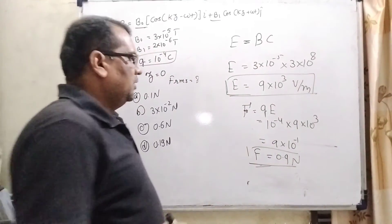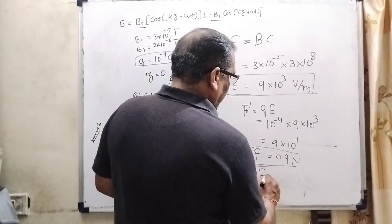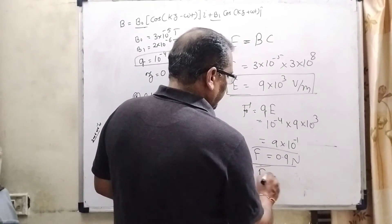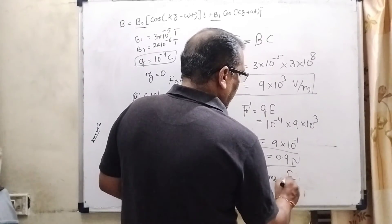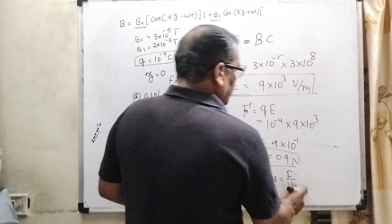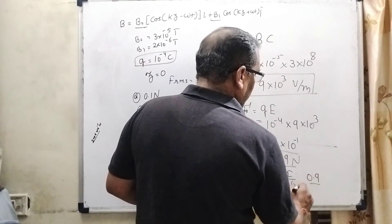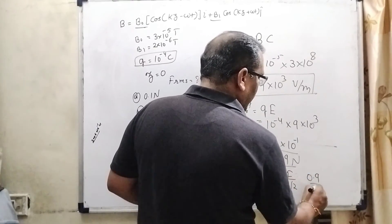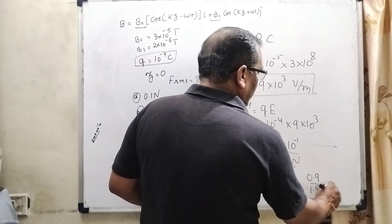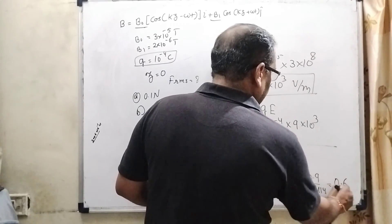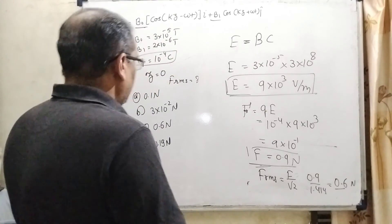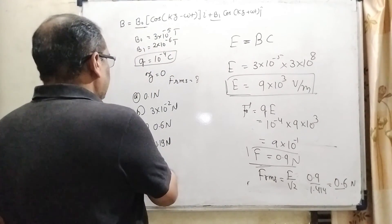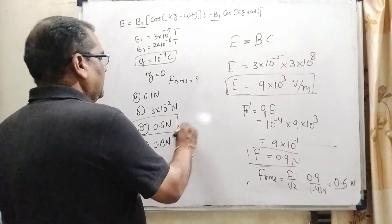So now, here F_RMS, root mean square value of force, that is F by root 2. So here 0.9 divided by root 2. What is the value of root 2? 1.414. Then you get approximately 0.6 newton. So here you can see that option C is correct.